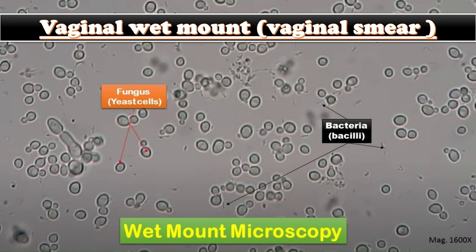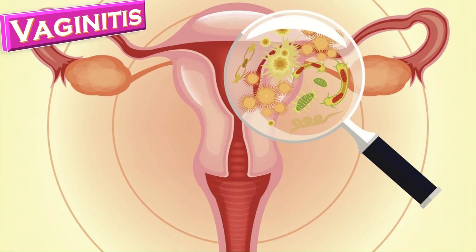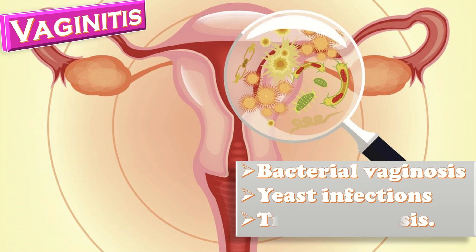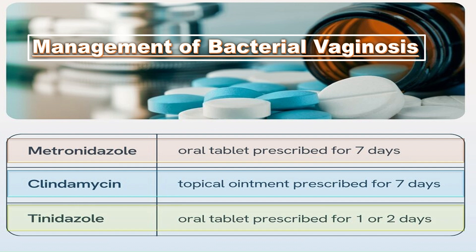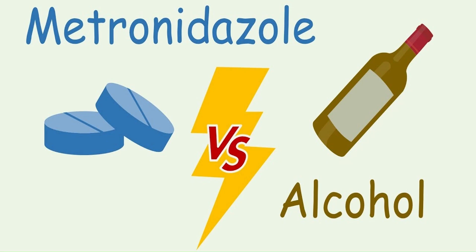Vaginal wet mount is a test to find the cause of vaginitis or inflammation of the vagina and vulva. Management of bacterial vaginosis includes metronidazole 400–500 mg twice daily for five to seven days, clindamycin cream topical ointment for seven days, or tinidazole 2 g once daily for two days, or 1 g once daily for five days. In alcoholics, metronidazole is avoided due to its disulfiram-like action.